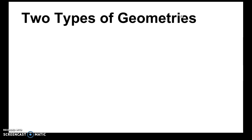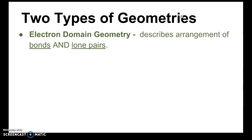There are two types of geometries that VSEPR structures allow us to predict. First is electron domain geometry, which describes the arrangements of all the electron domains — both the bonds and lone pairs. Since it considers all electron domains, we just need to know the number of electron domains to determine the electron domain geometry.